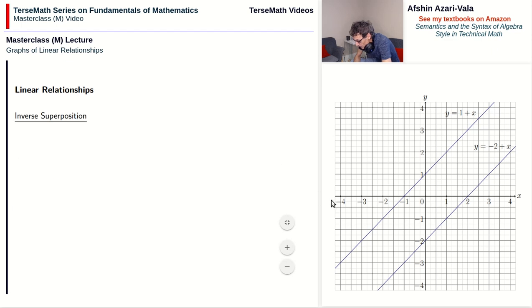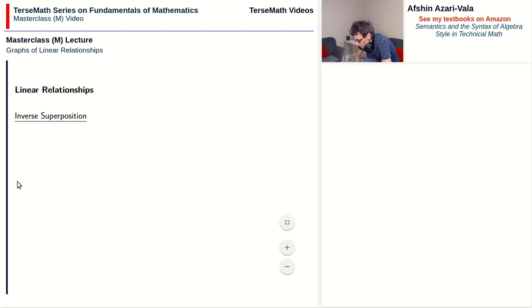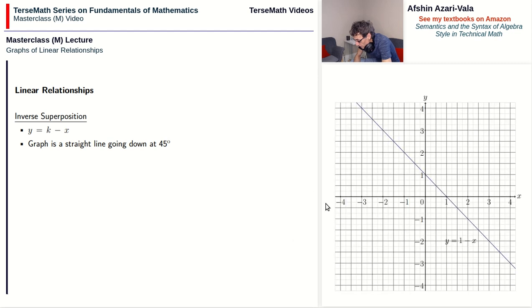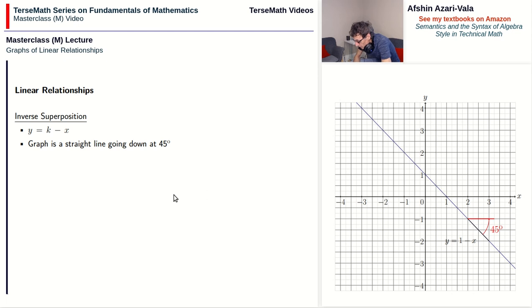Next we have inverse superposition. Inverse superposition problems have equations of the form y equals k minus x. For these, the graph is a straight line going down at 45 degrees. Here is an example with k equal to 1: y equals 1 minus x, and you can see the line going down at 45 degrees. Once again, for the 45-degree angle to show itself, you must have equal-sized units along the x and y axes; otherwise the graph becomes either compressed or dilated.